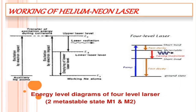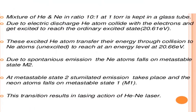This is the working of the helium neon laser. It consists of an energy level diagram of a four-level laser with two metastable states, represented by M1 and M2. The mixture of helium and neon is taken in a ratio of 10:1 at 1 torr, kept in a glass tube. Due to electric discharge, helium atoms collide with electrons and get excited to reach the ordinary excited state. These excited helium atoms then transfer their energy through collision to neon atoms, which reach an energy level at 20.66 electron volts.